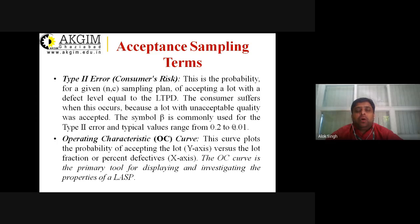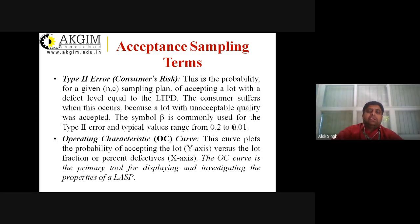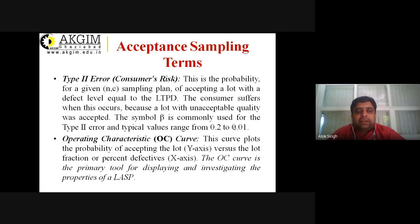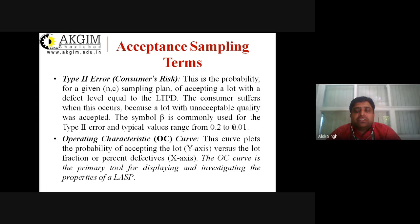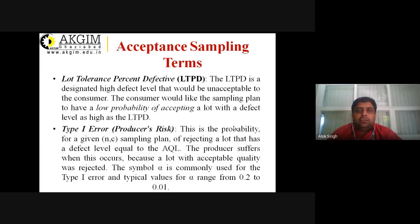Next is the Operating Characteristic curve, or OC curve. The OC curve plots the probability of accepting a lot and is the primary tool for displaying and investigating the properties of a LASP — Lot Acceptance Sampling Plan. These are the three basic terms used in an Acceptance Sampling Plan: AQL, LTPD, and the OC curve.